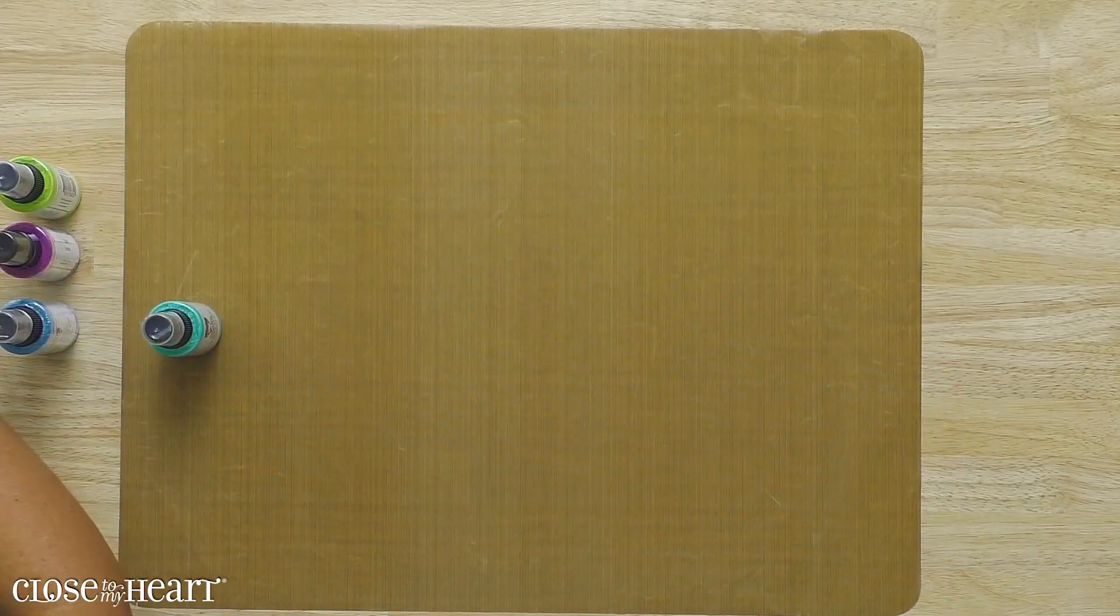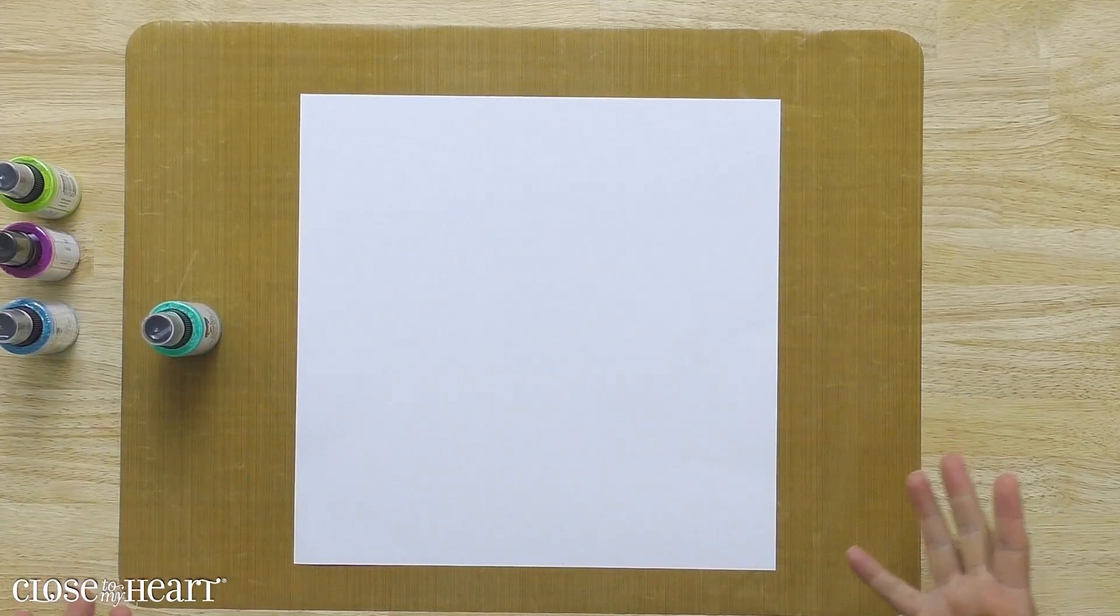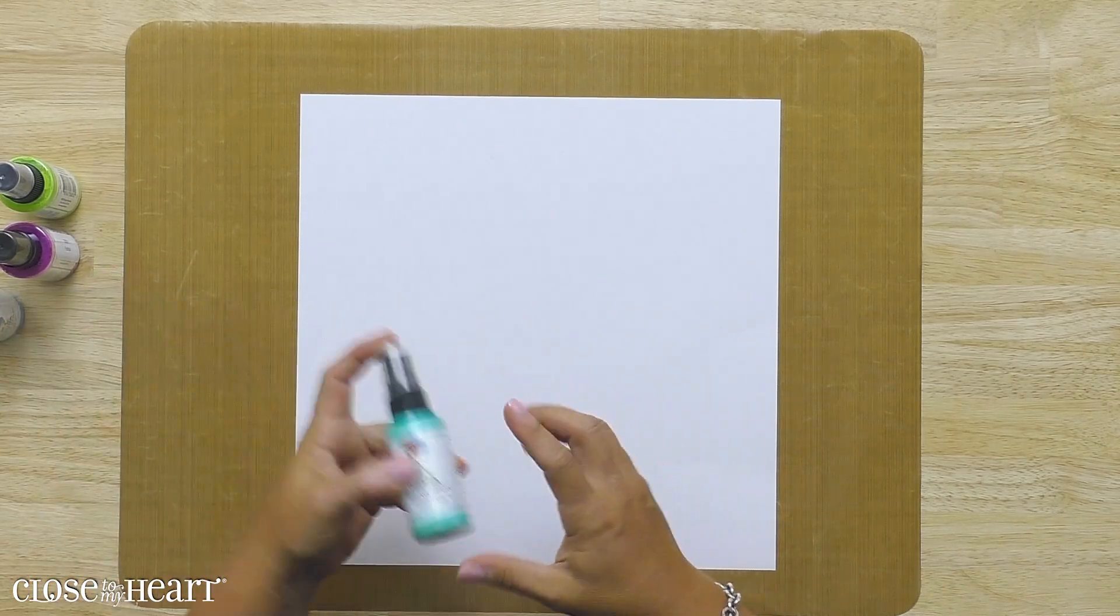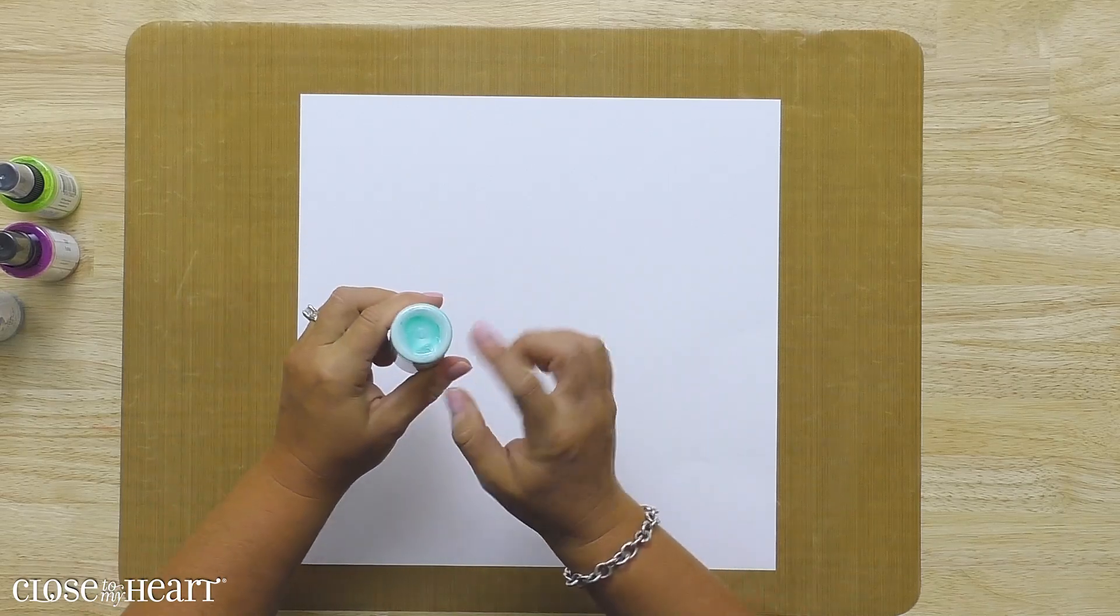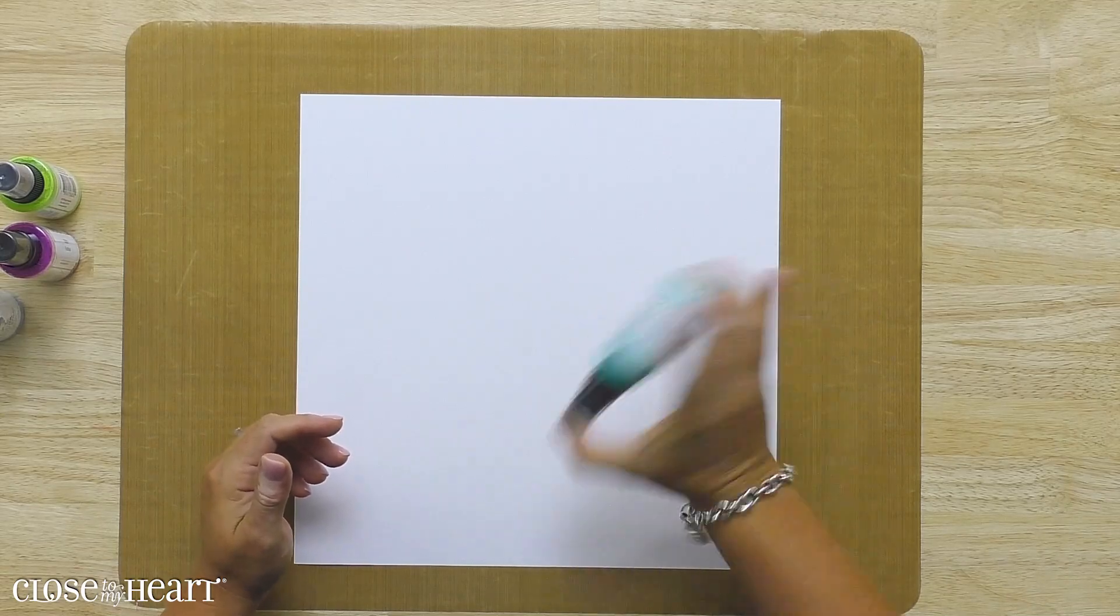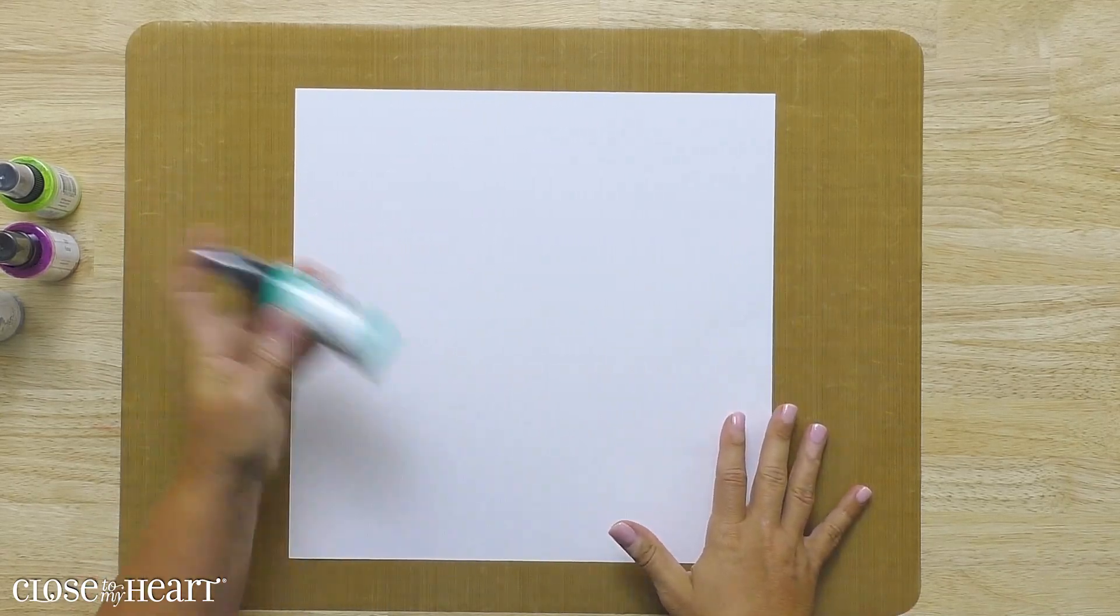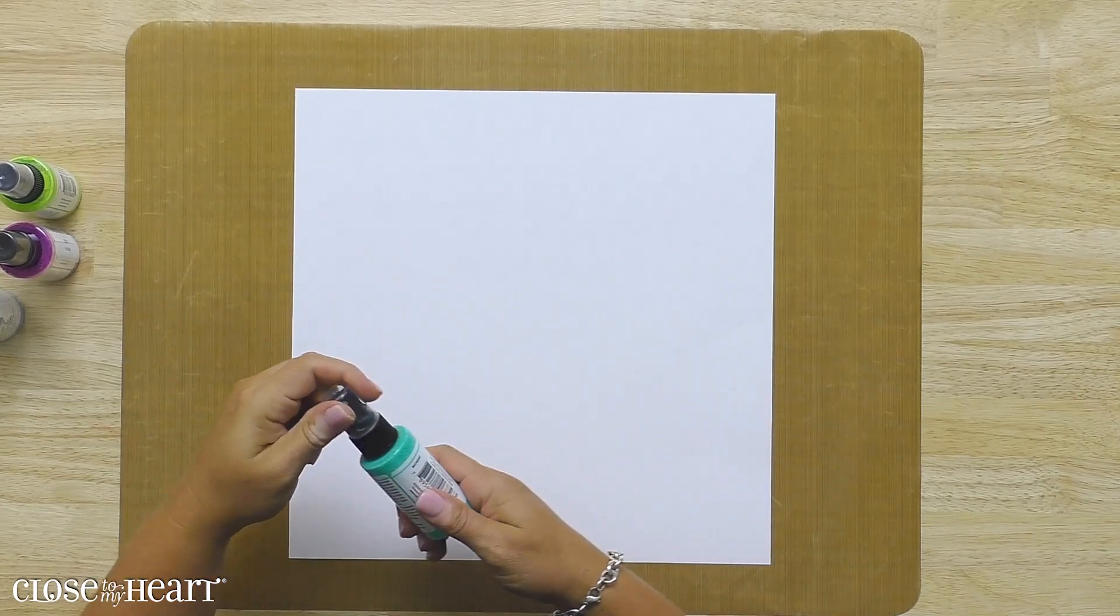So we're going to just simply grab a piece of white daisy cardstock and we're going to spray. It's so fun, it's so easy, and you're just going to start by making sure that you shake these really well. There's a little ball inside. You can see that the product does, because it's a nice thick opacity, it does kind of settle to the bottom, so just like you would a can of spray paint, you're going to want to shake it really well and get that color all mixed in.